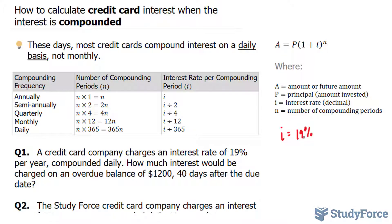So when it's compounded daily, you need to divide this number by 365 according to this chart and also divide it by 100 because we are using the decimal version, not the percentage.